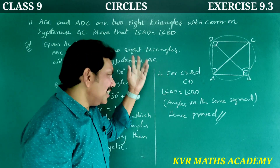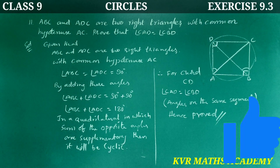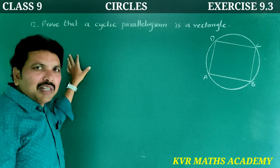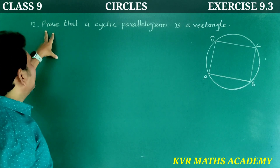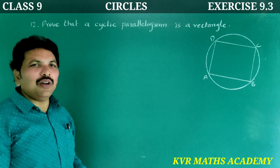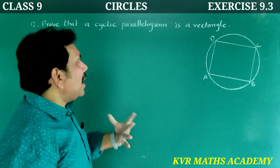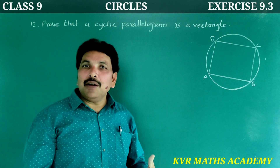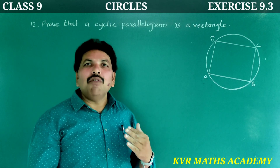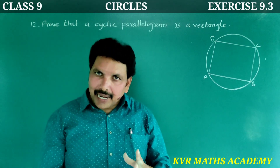Have you understood clearly? Note it all. Next, the 12th question — this is the final question in this chapter. Prove that a cyclic parallelogram is a rectangle. A parallelogram in which one angle is 90 degrees is called a rectangle.